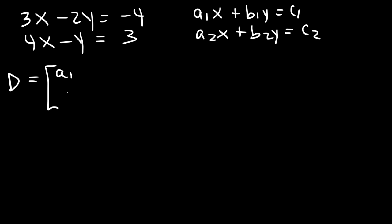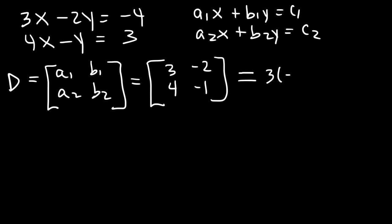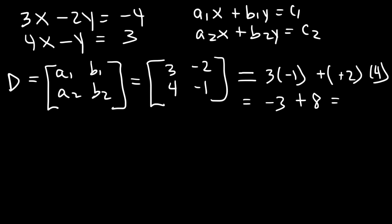D has elements a1, a2, b1, b2. So a1 is 3, a2 is 4, b1 is negative 2, b2 is negative 1. The determinant of this 2x2 matrix is 3 times negative 1, minus negative 2 times 4. That's negative 3, and the two negative signs cancel, giving 2 times 4 which is 8. Negative 3 plus 8 is 5, so d equals 5.